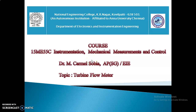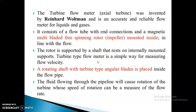Today we are going to see the topic of turbine flow meter. The turbine flow meter is used for measuring the velocity of fluid, either in liquid flow or gas flow. It was invented by Reinhardt Voltman. It is an accurate and reliable flow meter for liquid and gases, consisting of a magnetic multi-bladed free spinning rotor called an impeller, in line with the flow, supported by a shaft.